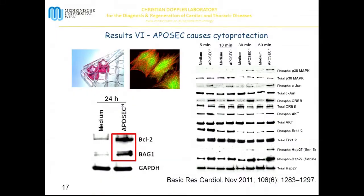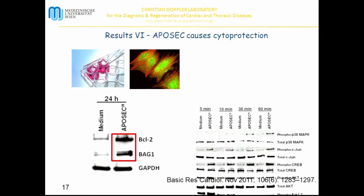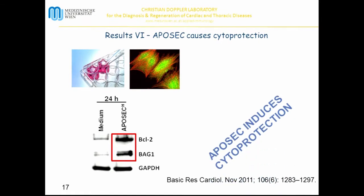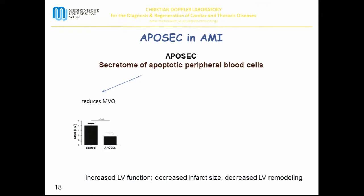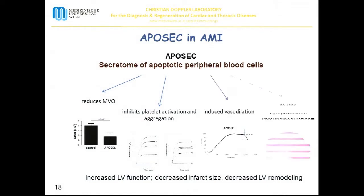A further effect of EPISEC is cytoprotection: production of BCL2 and other factors was significantly higher in EPISEC-treated animals, indicating that EPISEC also induces cytoprotection. In summary, the effects of EPISEC in acute myocardial infarction include: reduction of microvascular obstruction, inhibition of platelet activation and aggregation, induction of vasodilation, cytoprotection and immune modulation — all leading to increased left ventricular function, decreased infarct size, and decreased left ventricular remodeling.